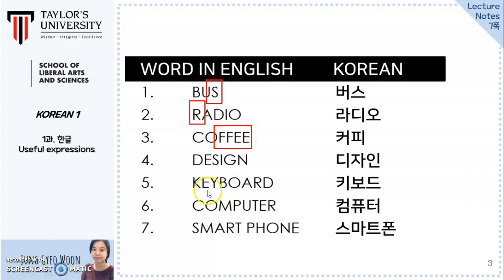Number five: Keyboard. Usually, the R after a vowel is not reflected in Korean spelling, so most of the time they ignore the ending consonant R in the English word when writing borrowing words in Korean. The last sound is the consonant D, and it also requires a vowel to form a syllable, so it ends up as three syllables. Keyboard.